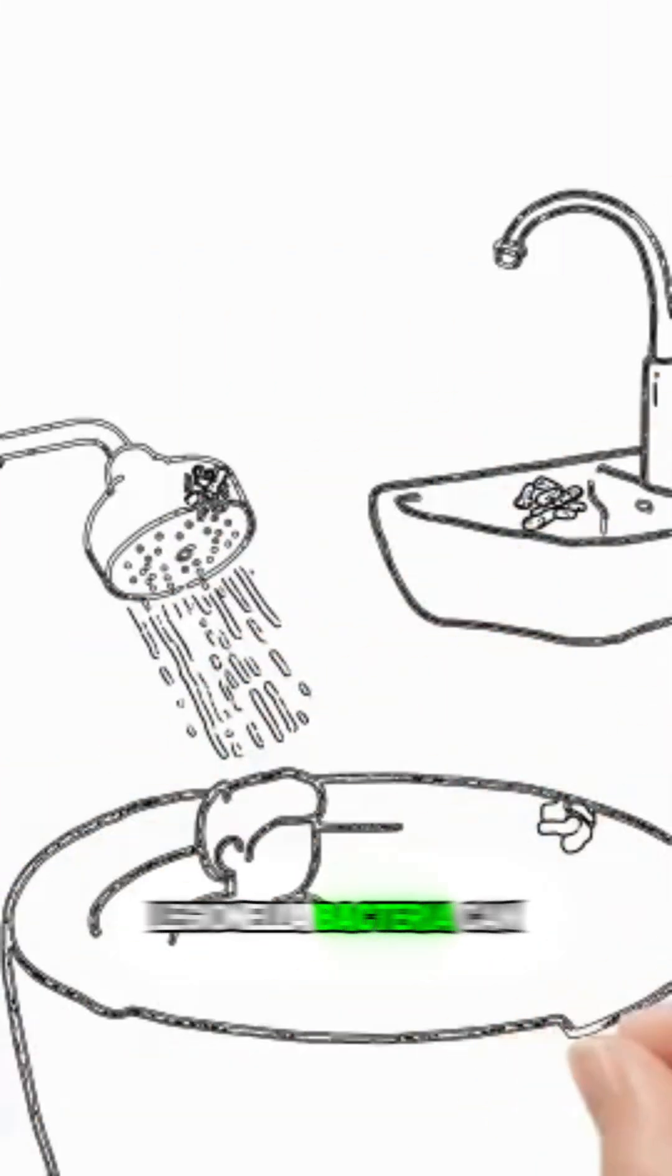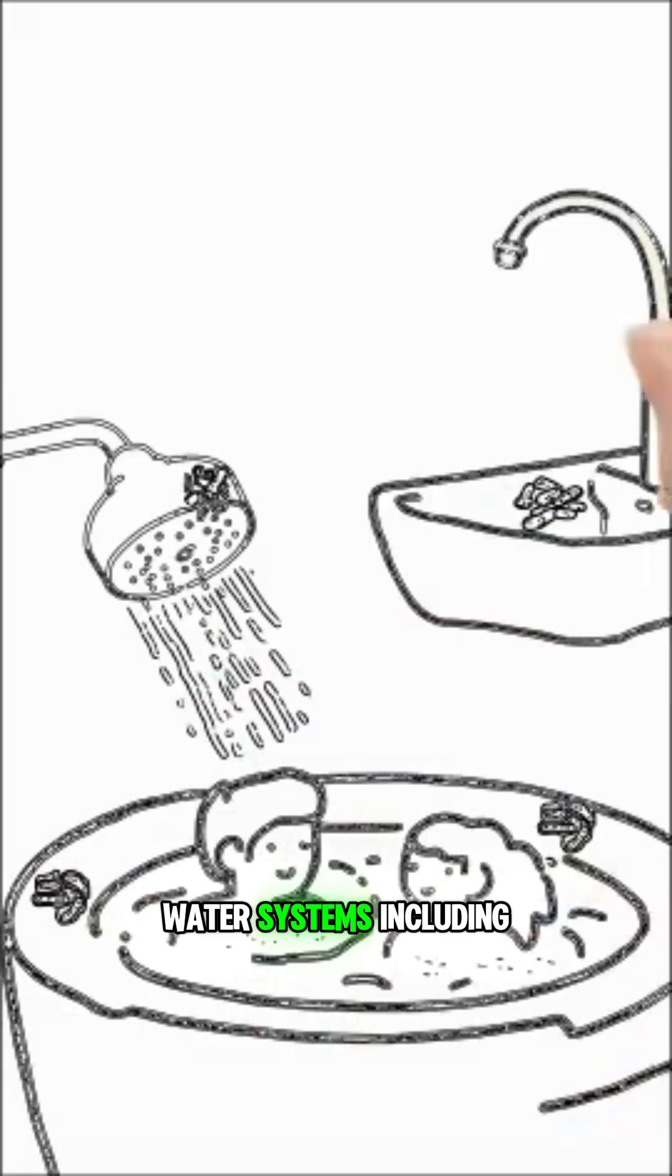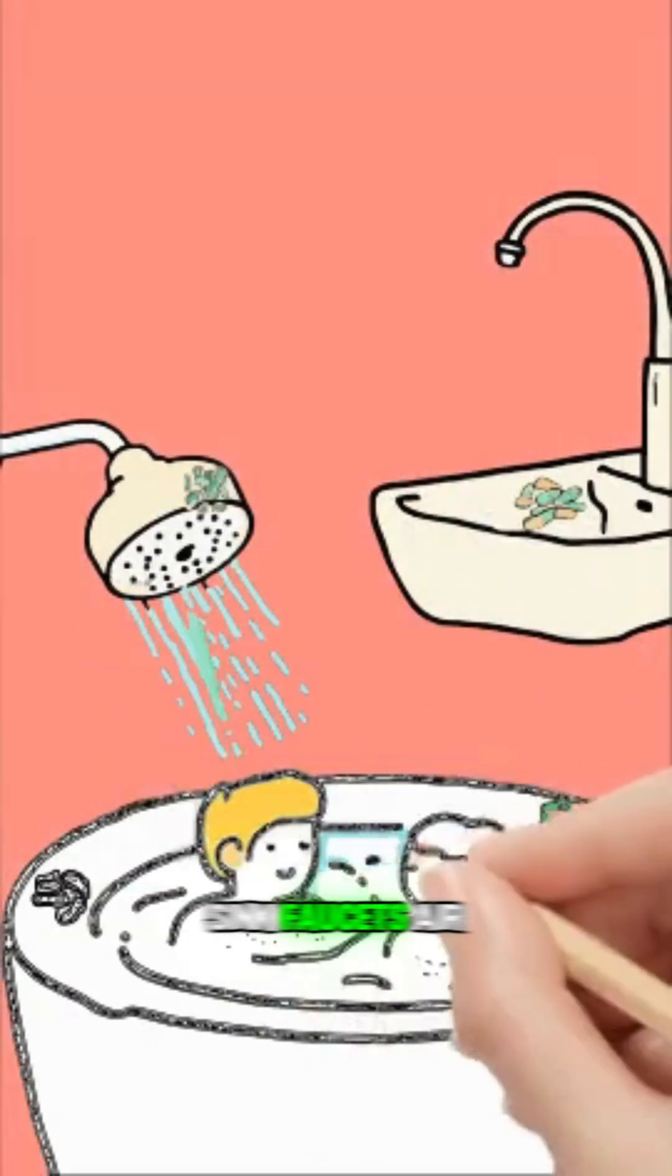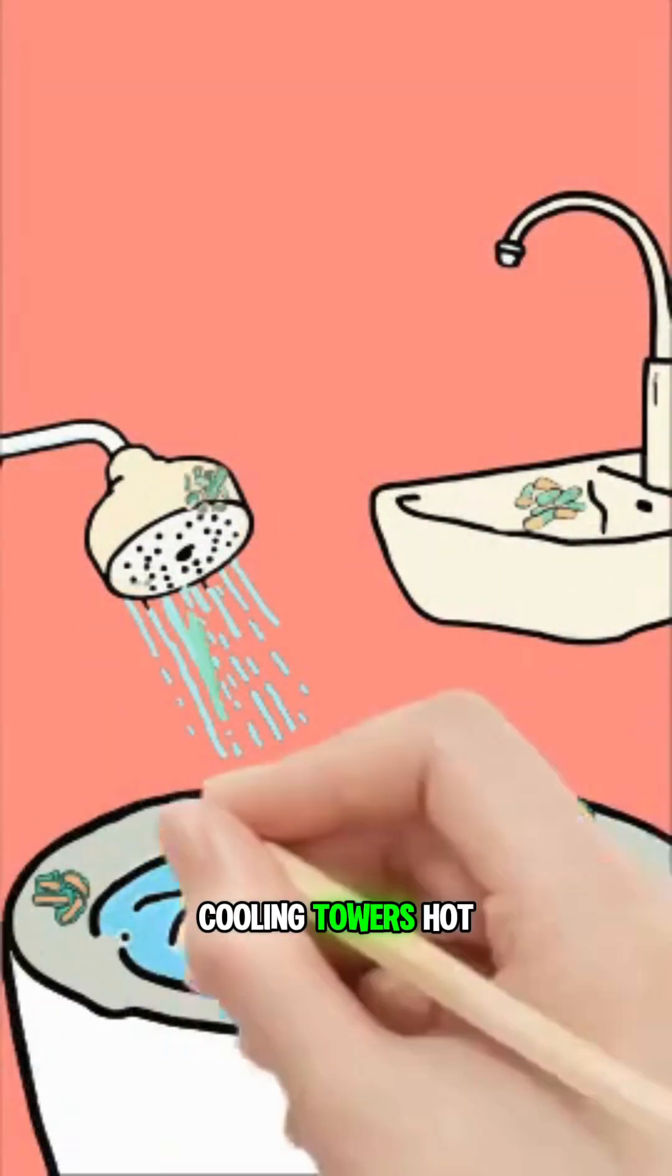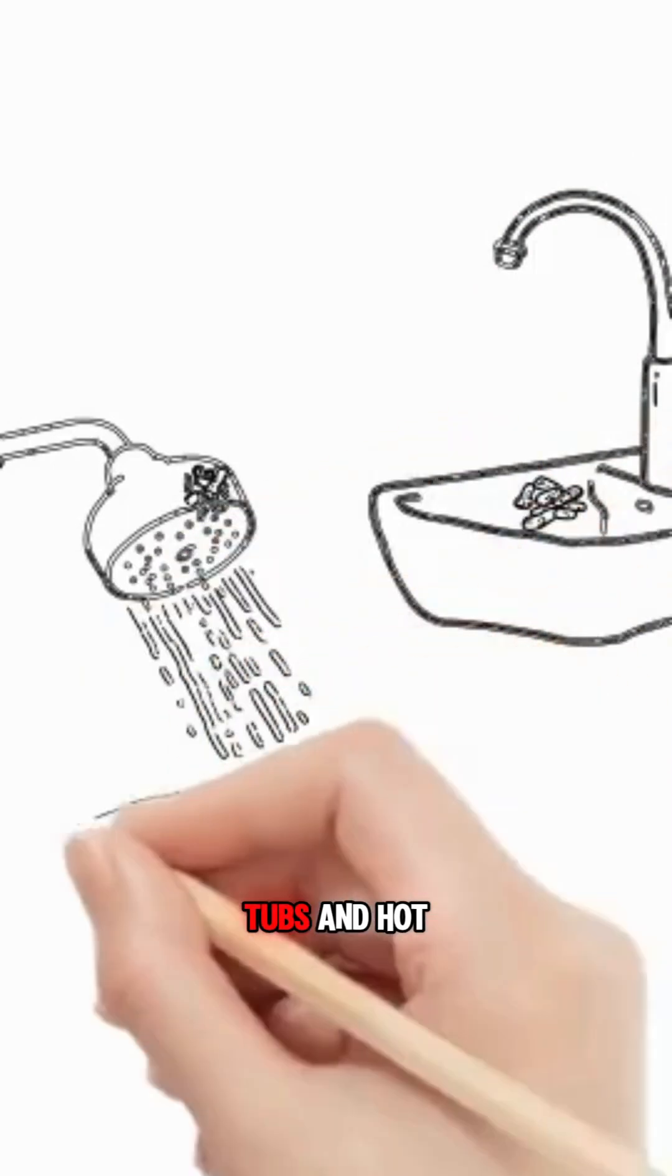Legionella bacteria can grow and spread through building water systems, including showerheads, sink faucets, air-conditioning cooling towers, hot tubs and hot water tanks.